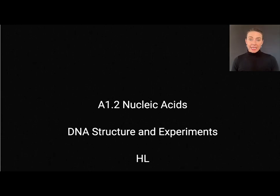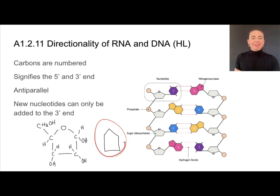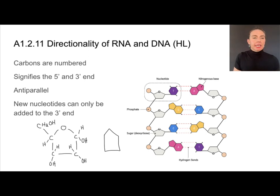In this video, we'll cover the higher level section of A1.2 on nucleic acids, which deals mostly with an in-depth look at DNA structure and experimentation. When we were drawing a nucleotide and drawing deoxyribose, we were just drawing it as a pentagon — a five-sided sugar. If I zoom in and take a look at the actual molecular structure, I can see that it's five-sided because there are one, two, three, four, five carbons. That's why we call it a pentose sugar.